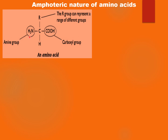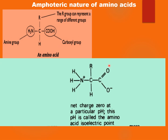The amino group accepts the proton, giving it a base characteristic. That is what makes the amino acid amphoteric. Once the carboxyl group gives out the proton it forms a carboxylate ion, and when the amino group accepts the proton it forms a triammonium ion. The whole structure formed is known as a zwitterion, since it has both negative and positive charges at different ends.